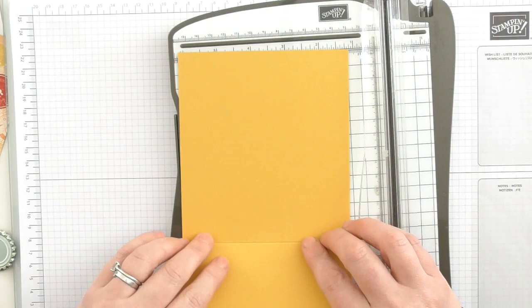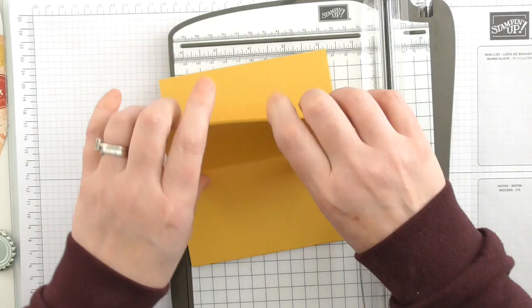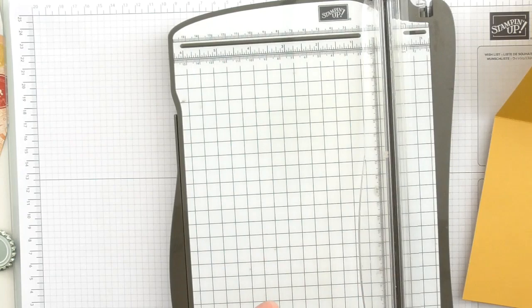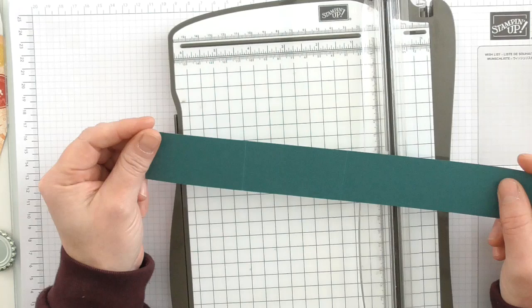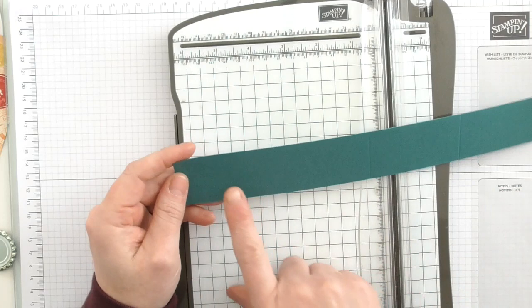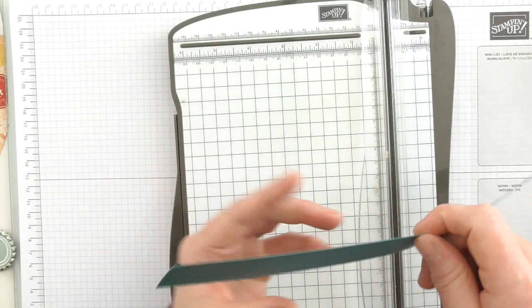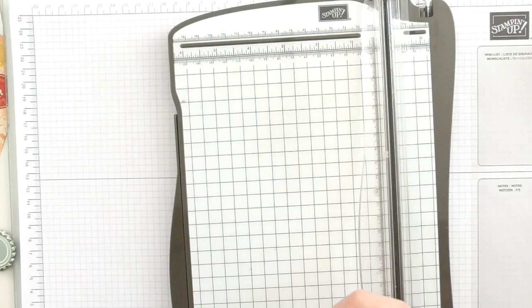Now I'm going to fold into my score instead of out. It's naughty, but if you want to do it right, turn your card over and score it the other way. You're folding like that so you've got a Z. For your second piece, I have used Tranquil Tide cut to 11 inches by one and a half inches, scored at 5 and a half inches and then 8 and a quarter.